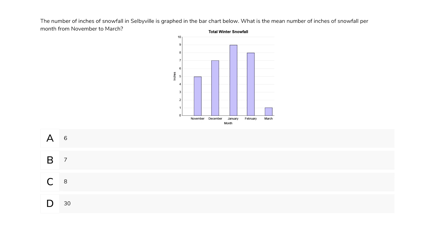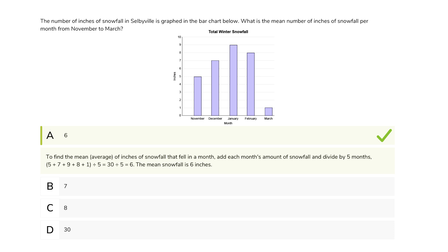So, five plus seven plus nine plus eight plus one, which equals 30. There are five data points, so 30 divided by five gives us six. So, this one is correct. Nice.